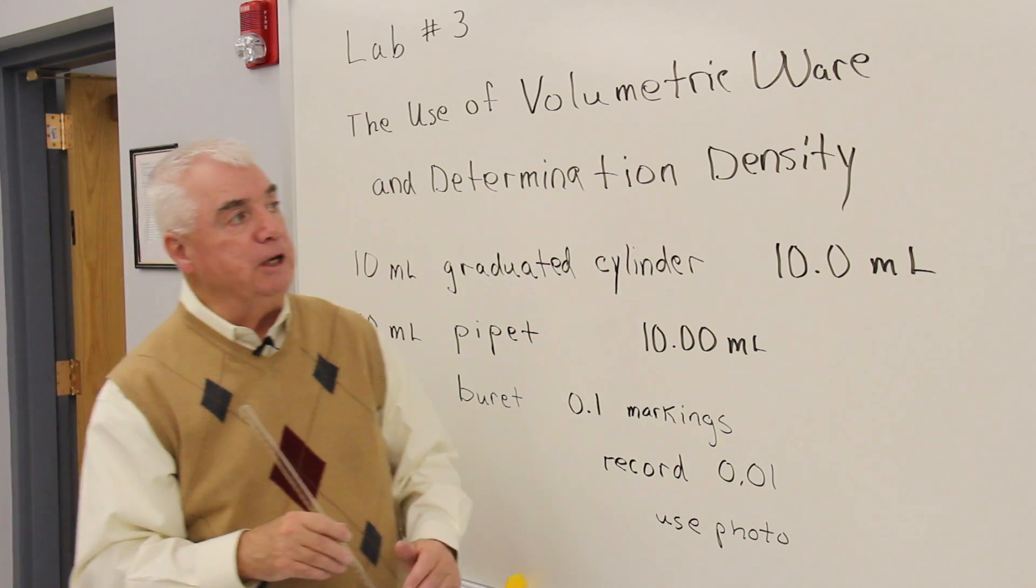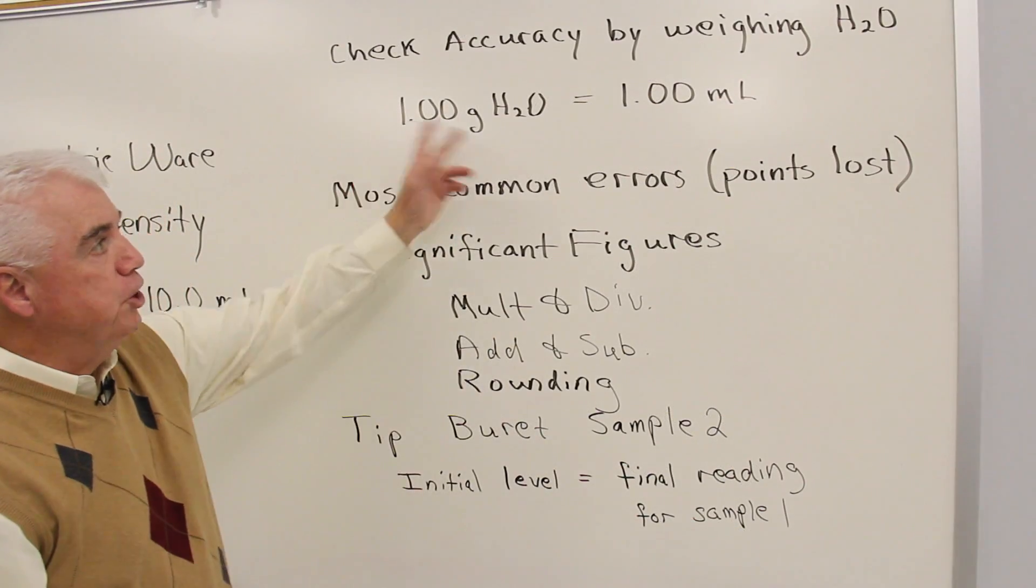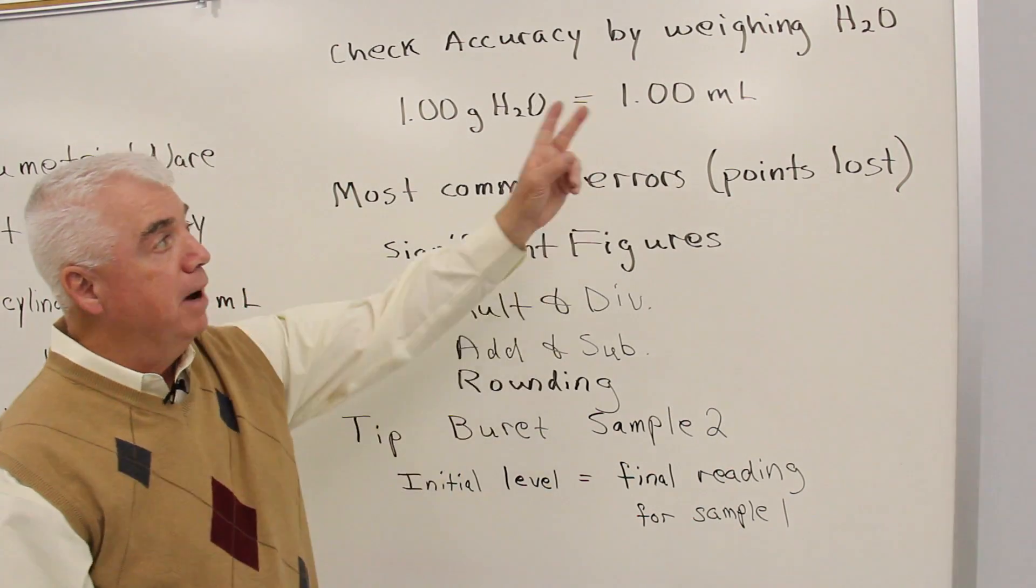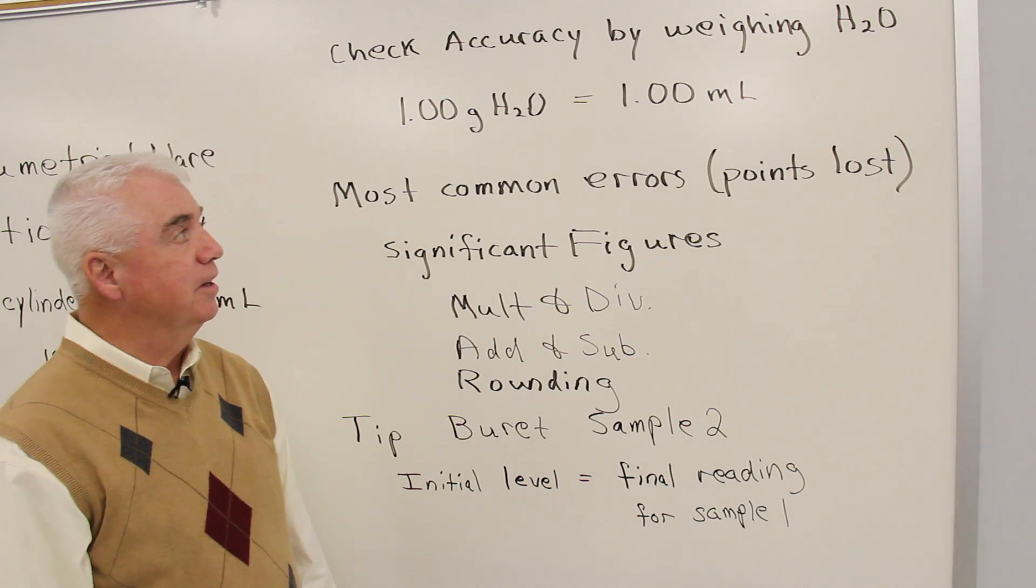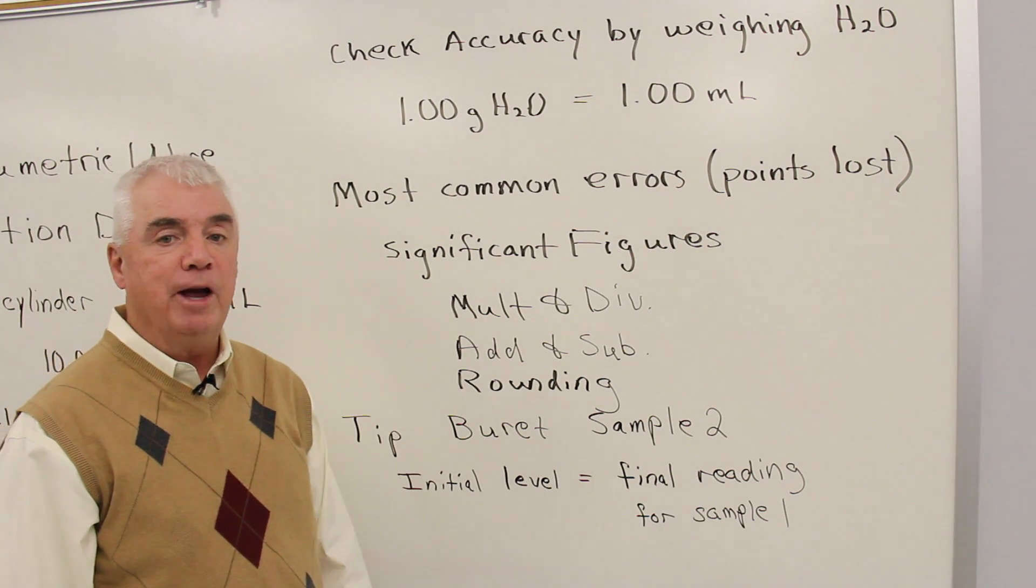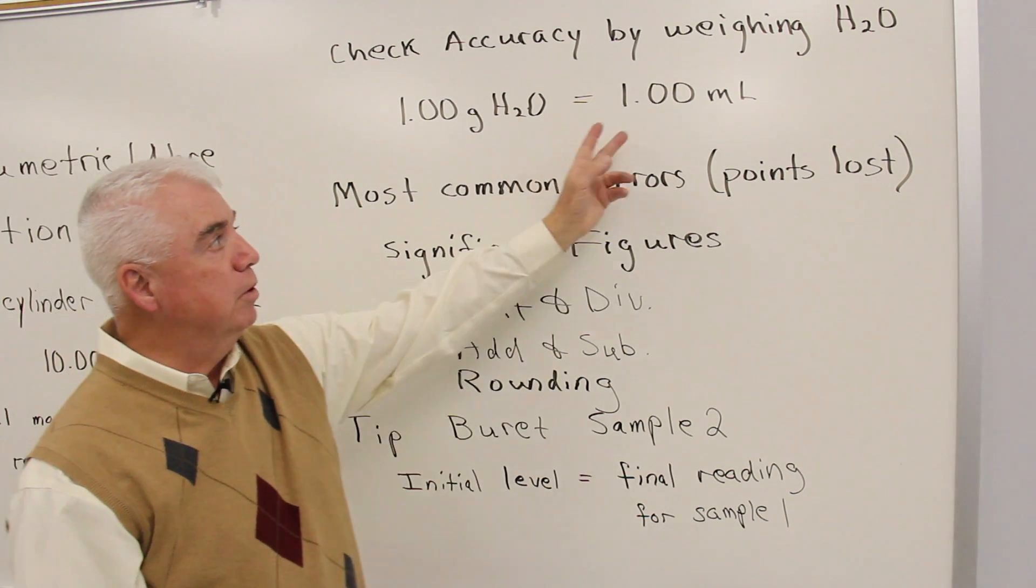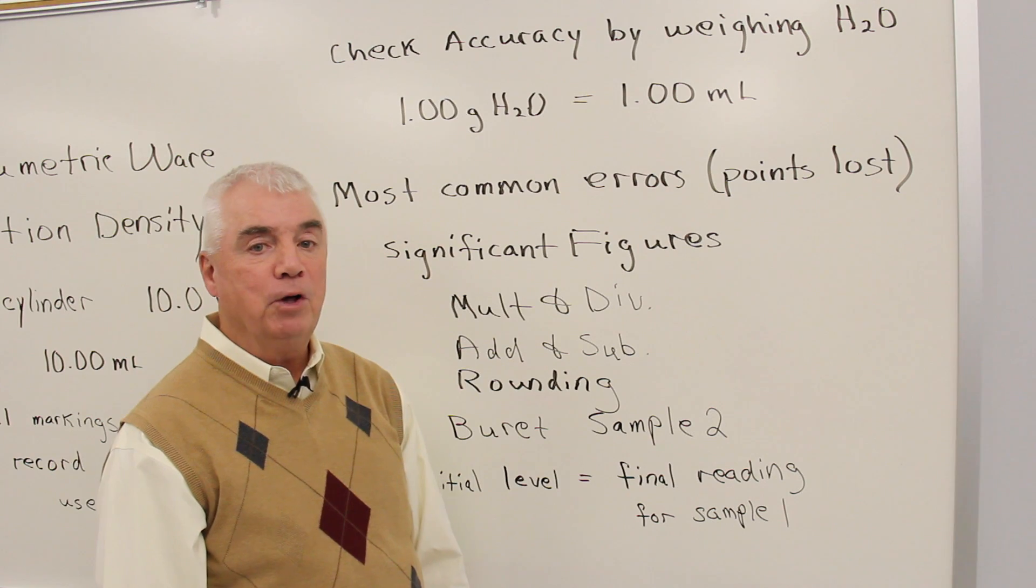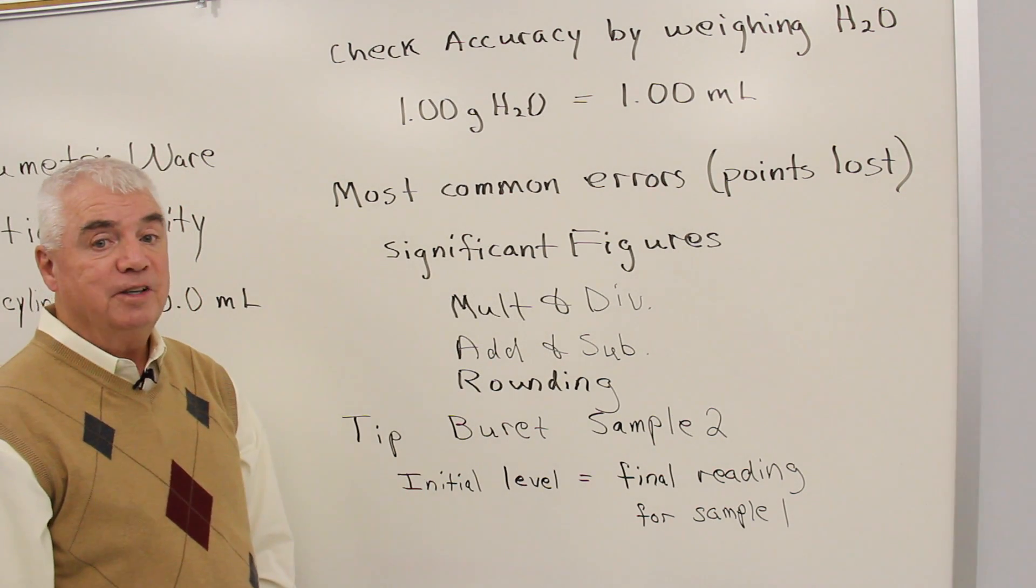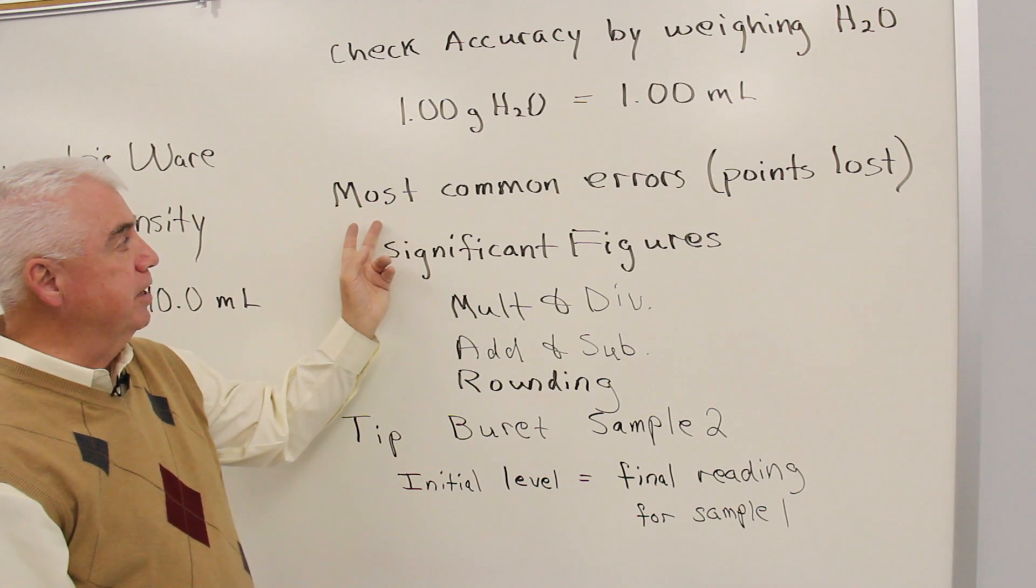Let's look at some more information. We'll be checking the accuracy of these pieces of volumetric wear by weighing the water samples that we measure out, and we'll be using the fact that 1.00 grams of water is equal to 1.00 milliliters. So it enables us to weigh things and to check the accuracy of volumes.